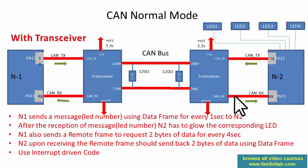N1 sends a message — which is actually a LED number — using a data frame every one second to N2. You can use a timer here which generates an interrupt every one second, and in the timer interrupt handler you send a CAN data frame from N1 to N2.